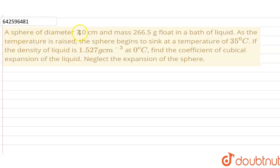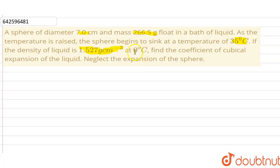A sphere of diameter 7 centimeter and mass 266.5 grams floats in a bath of liquid. As the temperature is raised, the sphere begins to sink at a temperature of 35 degrees Celsius. The density of the liquid is 1.527 gram per centimeter cube at 0 degrees Celsius. Find the coefficient of cubical expansion of the liquid.